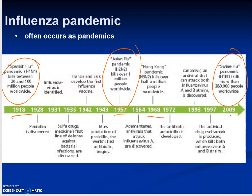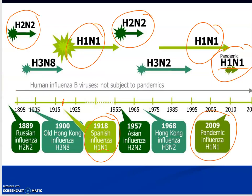Looking at flu pandemics over the last 100 years: the Spanish flu killed an estimated 20 to 100 million people worldwide — it was an H1N1 combination. The Asian flu pandemic of 1957 was H2N2 and killed over 1 million people worldwide. The Hong Kong pandemic was H3N2 and killed over half a million people. The swine flu pandemic, which you may remember, was another H1N1 combination that killed more than 280,000 people worldwide.